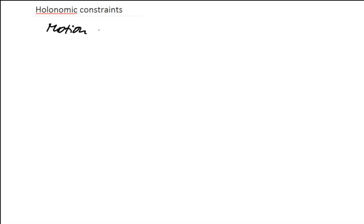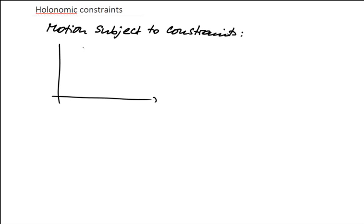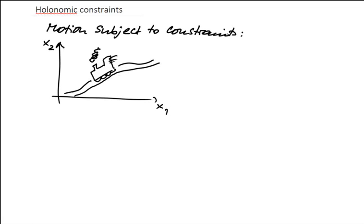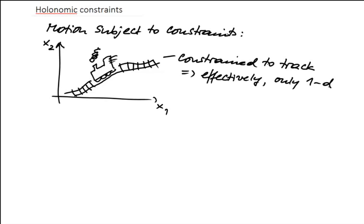We look at motion that is subject to some constraint. For example, consider motion in two dimensions on the surface of the Earth. There's an object — a locomotive — and the motion of that locomotive is constrained to railway tracks. So effectively, the motion of the locomotive is not two-dimensional but only one-dimensional. This is very similar to the inclined plane example, where the motion, even though it took place in two dimensions, was effectively constrained to a one-dimensional line.